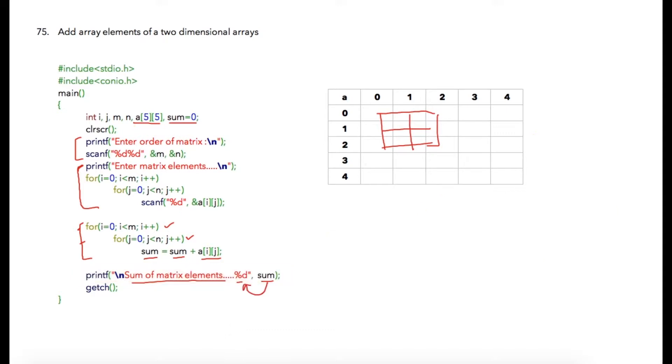Assuming user has entered one at all the places, then your final output would be sum of matrix elements is nine, because we had considered that user has entered three by three matrix. So total nine elements, and because all the elements are holding one as value, so sum of all the elements would be nine.